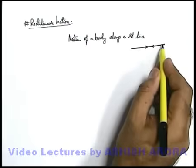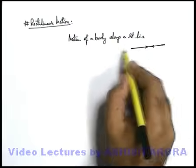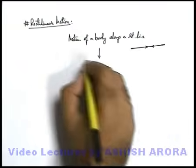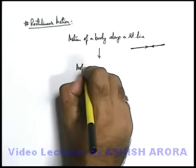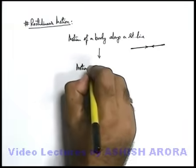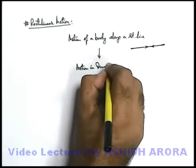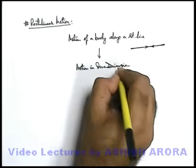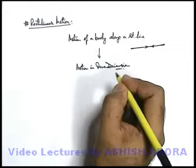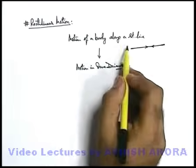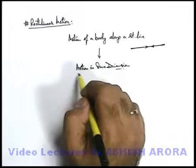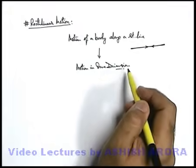In case of rectilinear motion, as the body moves only along one dimension of a coordinate system, we can simply write it as motion in one dimension. So motion along a straight line can be either termed as rectilinear motion or motion in one dimension.